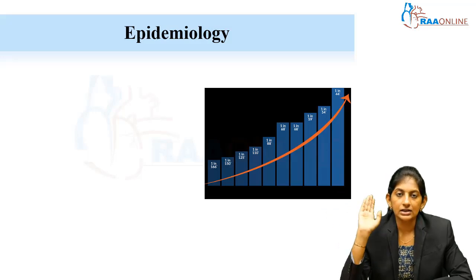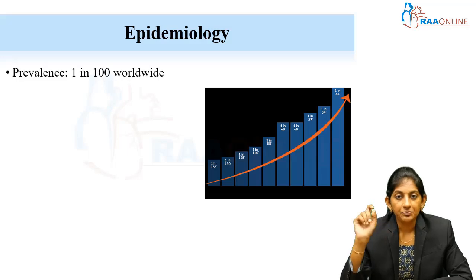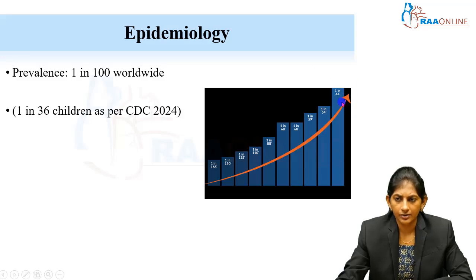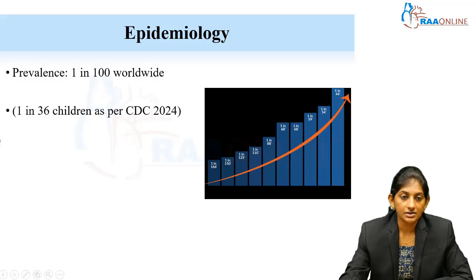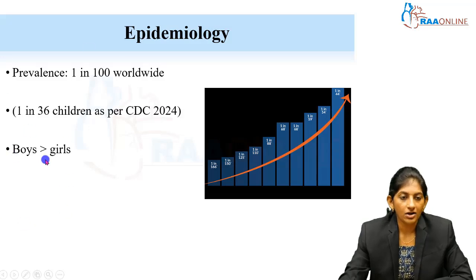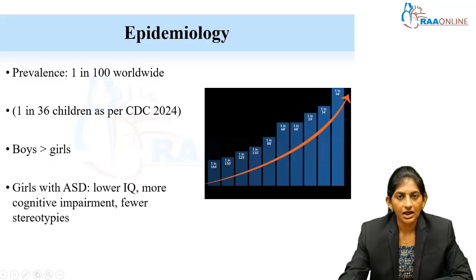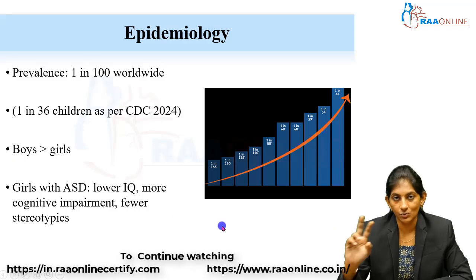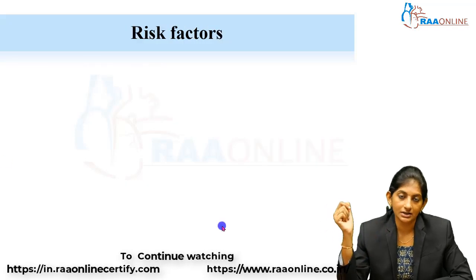The sad point is that over the last hundred years the incidence of ASD has been increasing. The latest CDC report puts prevalence at 1 in 36, which is very high — this is a worldwide prevalence. ASD is also more common in boys compared to girls. Girls with ASD tend to have a lower IQ, more cognitive impairment, and fewer stereotypies — something peculiar for girls affected with ASD.